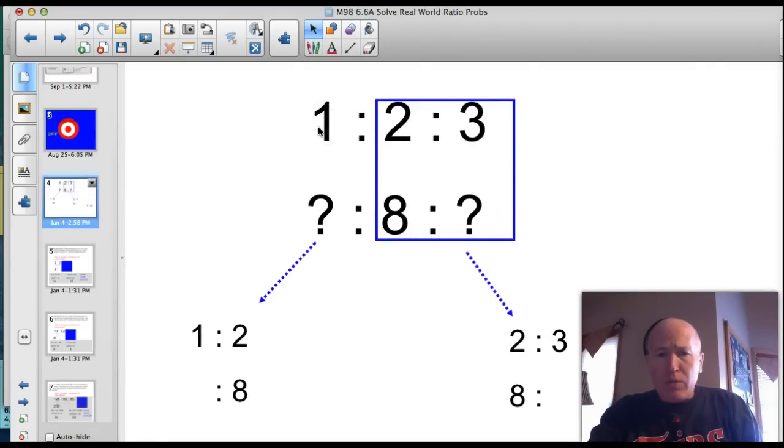Tonight officially the target is 6.6a enrichment, pushing it a little bit further. I can solve real world ratio and rate problems. No trivia or anything tonight, this is just a short one here.